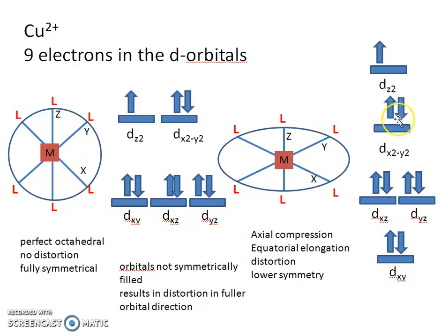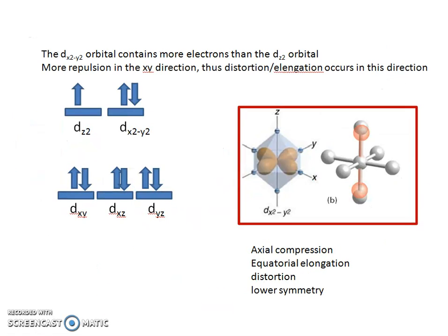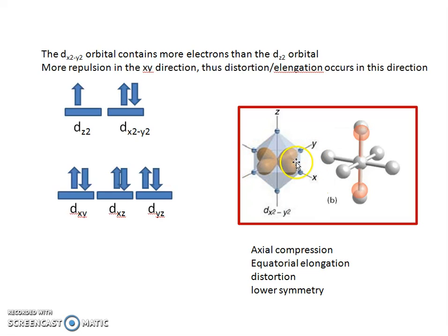The orbitals that have x and y components therefore have lower energy. The d_(x²-y²) orbital contains more electrons than the d_z², meaning there is more repulsion in the x and y direction, resulting in elongation in this direction and lower energy for those orbitals. The d_z² and d_xy orbitals therefore have lower energy. As explained before, equatorial elongation is equivalent to axial compression — instead of the equatorial ligands elongating, it may appear as if the two axial ligands have moved closer. So axial compression and equatorial elongation are the same type of distortion.